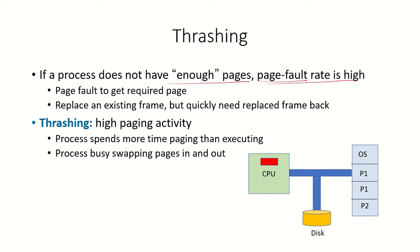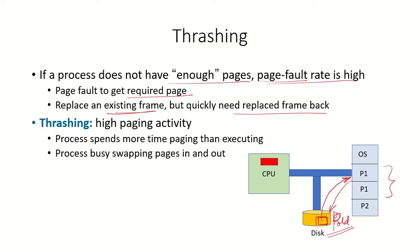The process wants to get a particular page and it is not there in the memory, so it will page fault to get the required page. The required page is brought in and the old page is taken back to the swap space. But now there is a possibility that this old page which has been replaced is required again in the next instruction, so again there will be a need to quickly bring it back. Thrashing refers to this high paging activity.